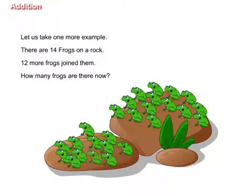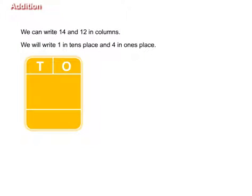How many frogs are there now? Now, we can write fourteen and twelve in columns. We know that fourteen has one ten and four ones. So, we will write one in tens place and four in ones place.